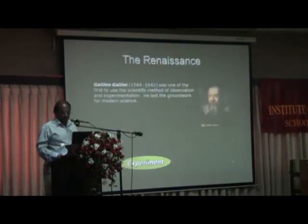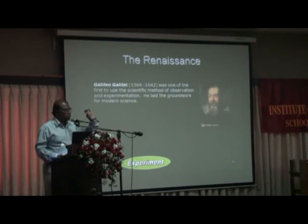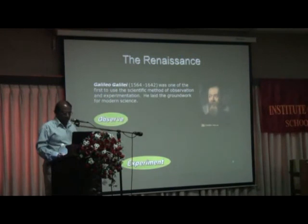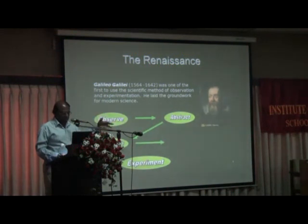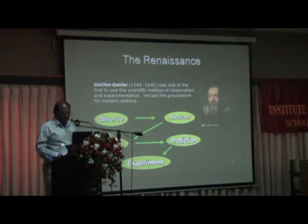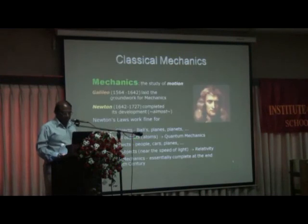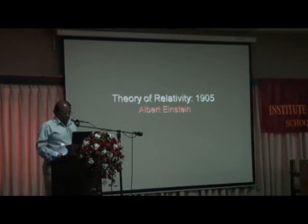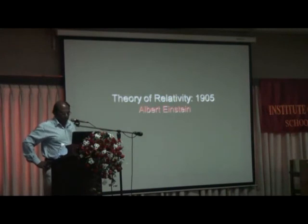This is Galileo Galilei, who discovered the telescope, which opened up all the galaxies and the universe to us. In physics we observe things — like planetary motion or stars — then we theorize, form models and laws. That's all physics, and it's experimental science, so these theories we can test. After Galileo, Newton formulated gravitation and many other laws in physics. And the theory of relativity in 1905 — Albert Einstein.